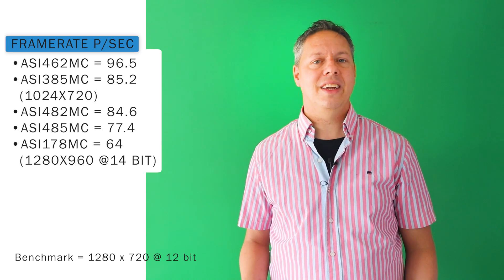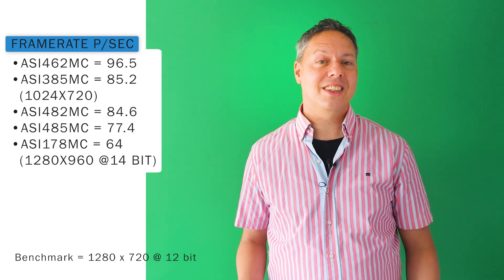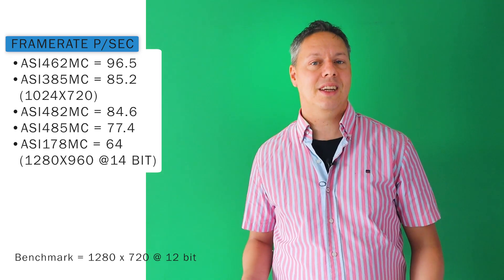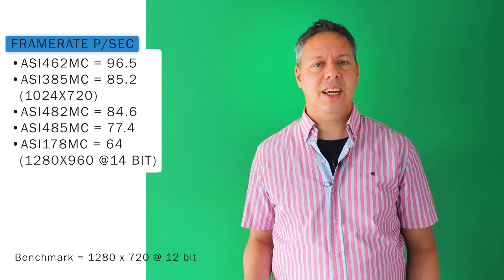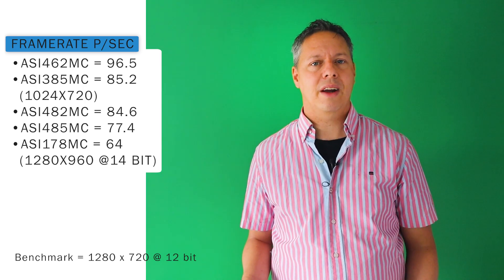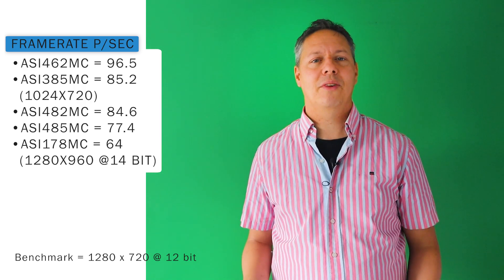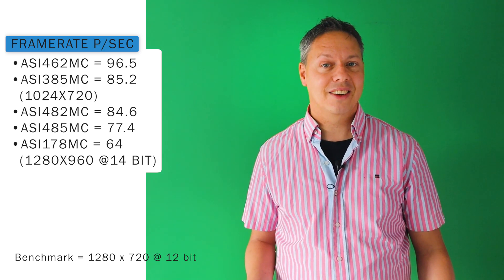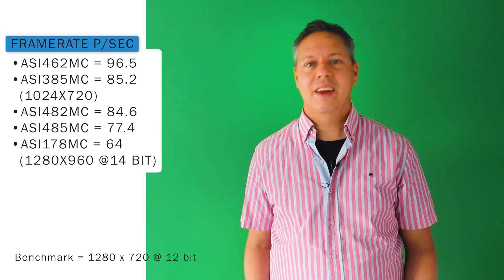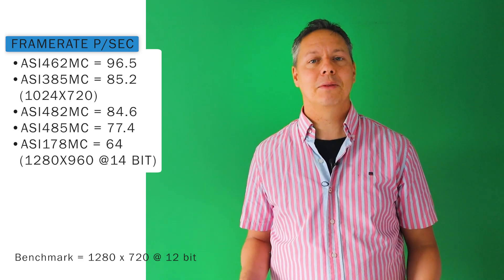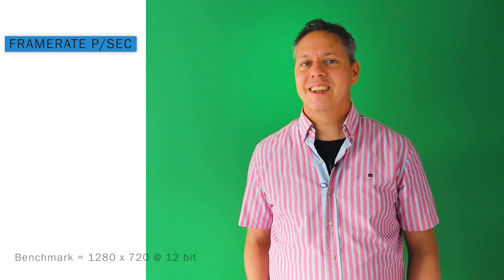I checked the FPS across cameras at a similar resolution of about 1 megapixel, which is about 1280 by 720 pixels, at 12 bit output. At that resolution and output, the ASI 462MC appears to be the fastest color camera at 96.5 FPS, followed by the 385 at 85.2 FPS — though the reported resolution of the 385 is somewhat lower at 1024 by 720 pixels. The 482MC reaches a maximum of 84.6 FPS followed by the 485 at 77.4 FPS. The 178 appears to be the slowest at 64 FPS, but when running that camera at 10 bit the maximum FPS jumps to 120. Like I said, apples and pears. This being said, the ASI 462 does appear to be one of the fastest cameras in this bunch.